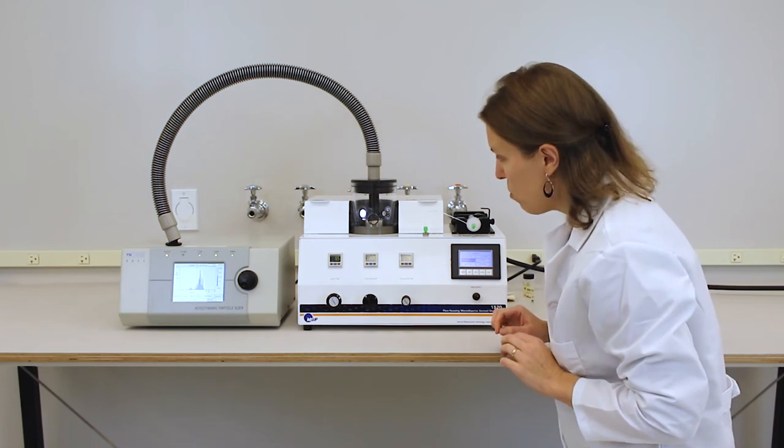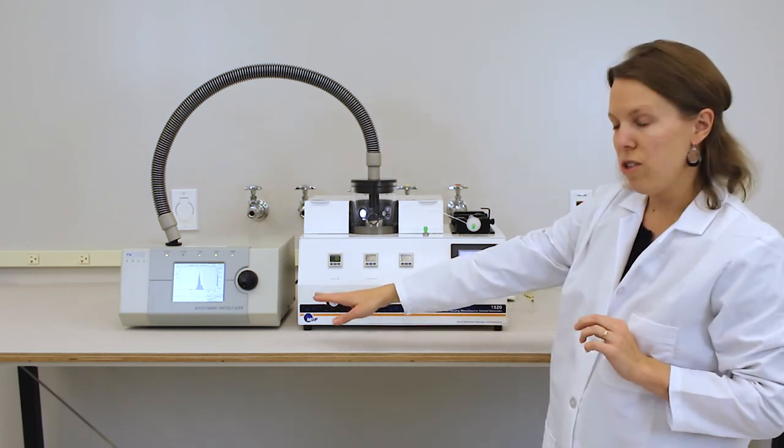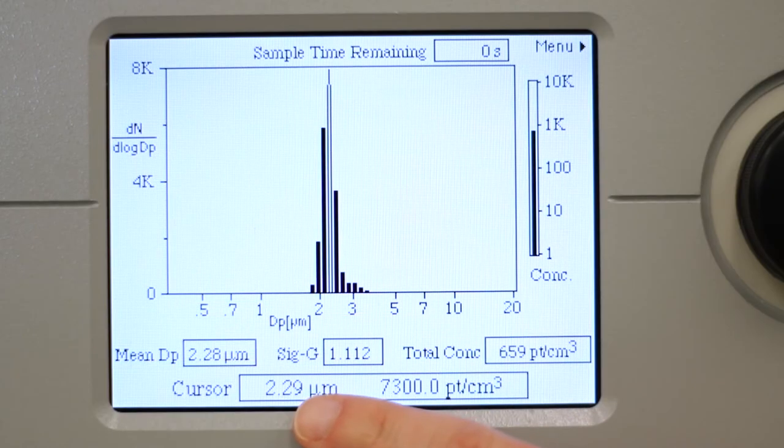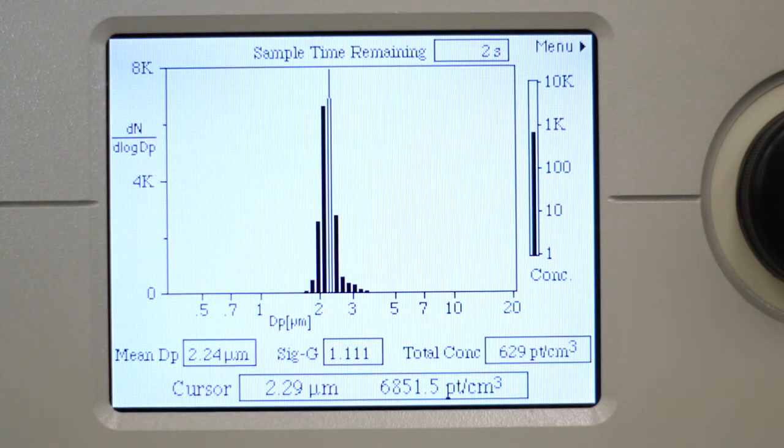Once the jet is stable, we can turn our attention to the aerodynamic particle sizer where we can start to see the generated particles being measured. Our target was 2.3 microns and we can see that the mode size is right around 2.3 microns.